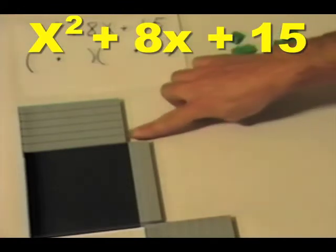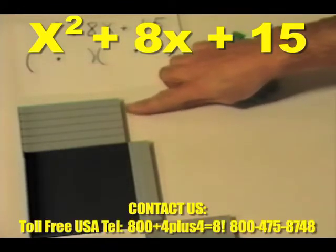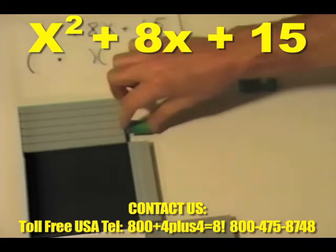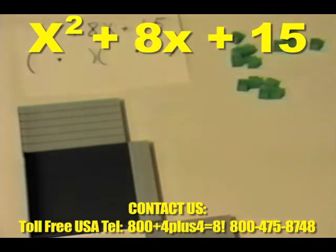At this point, we have been practicing our skip counting and we will skip count: two, four, six, eight, ten, twelve. Two, four, six, eight, ten, twelve. Fifteen will not fit in the corner.